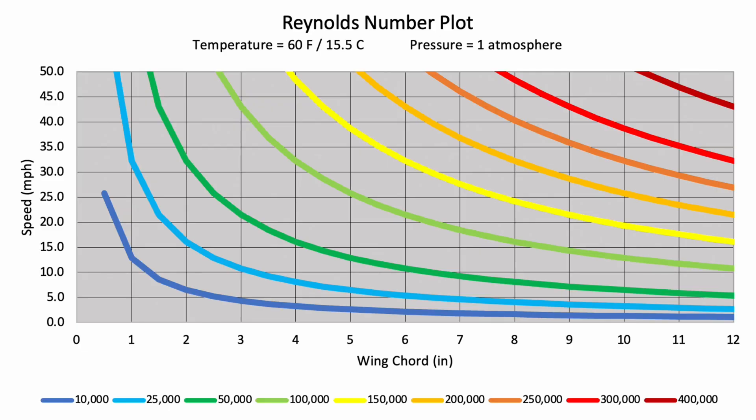This chart shows the approximate Reynolds numbers we'll be working with for different chord lengths and speeds of our planes. While these values shown along the bottom may seem like very high numbers at first, they are actually quite low. Full-size airplanes usually have Reynolds numbers in the millions or even billions.